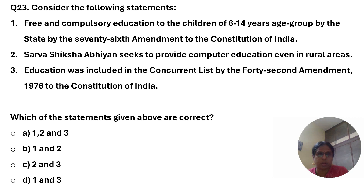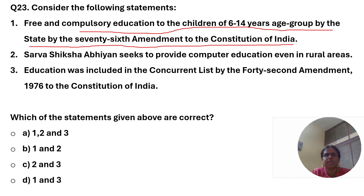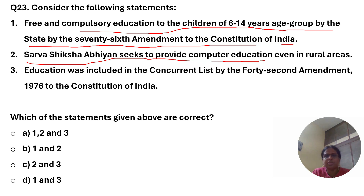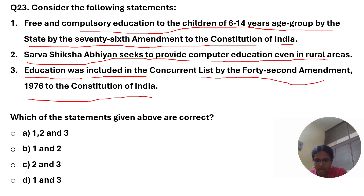Hello friends, Indian polity previous year questions. Consider the following statements: First, free and compulsory education to children of 6 to 14 years age group was provided by the state by the 76th amendment to the Constitution of India. Second, Sarva Shiksha Abhiyan seeks to provide computer education even in rural areas. Third, education was included in the concurrent list by the 42nd amendment 1976 to the Constitution of India. Which of the statements given above are correct?